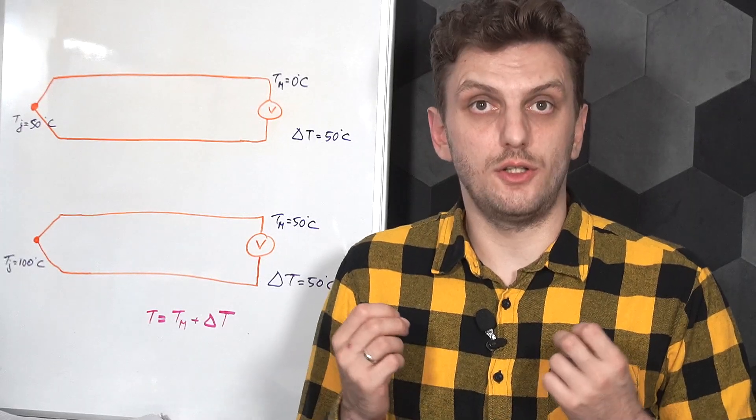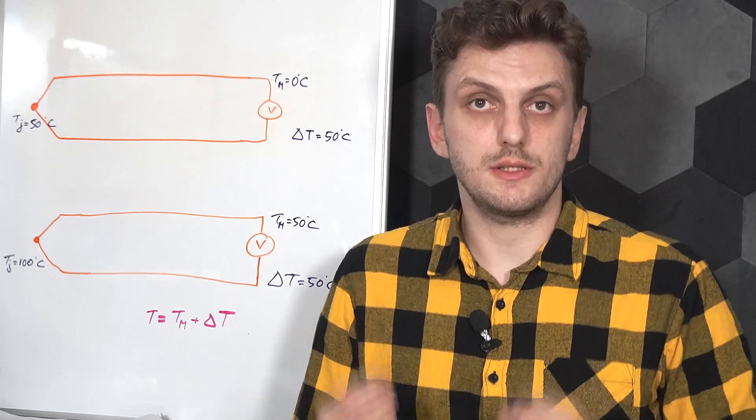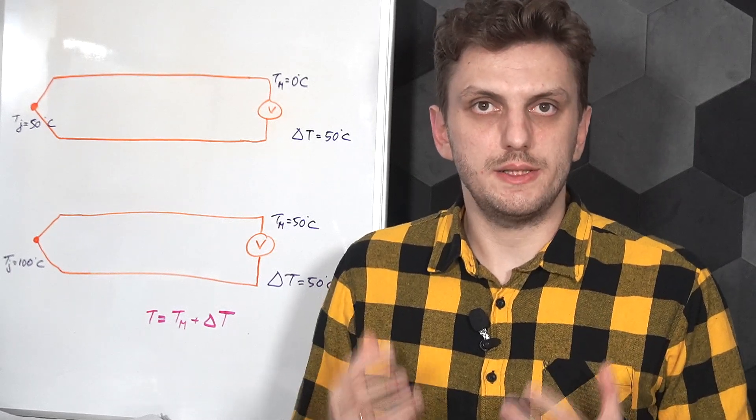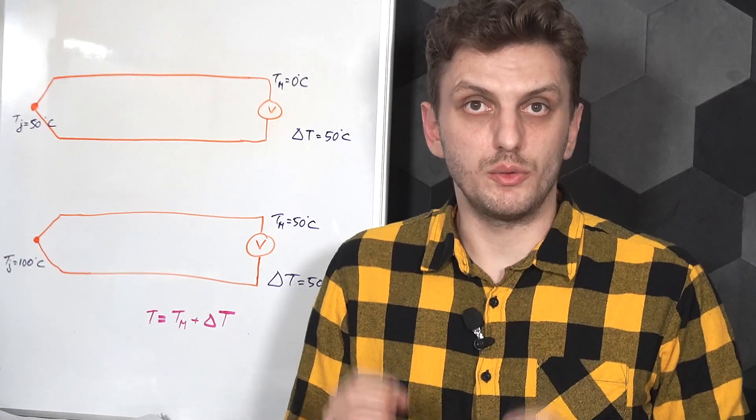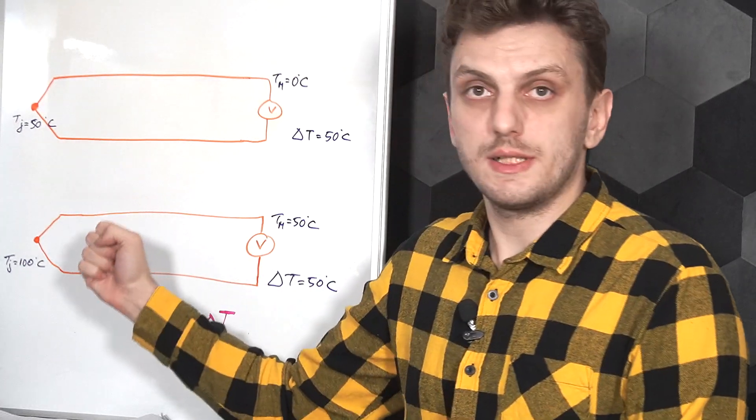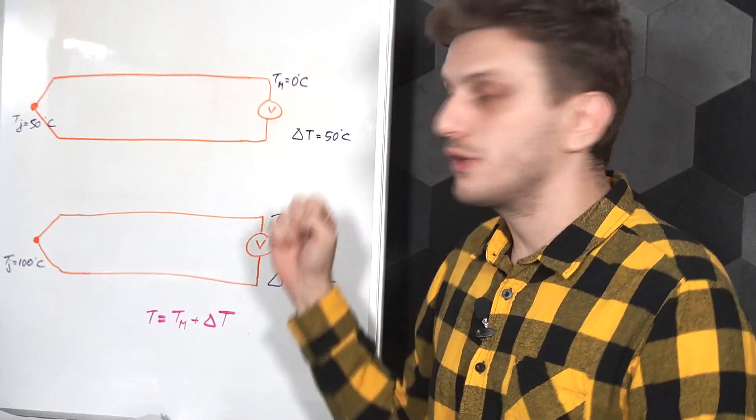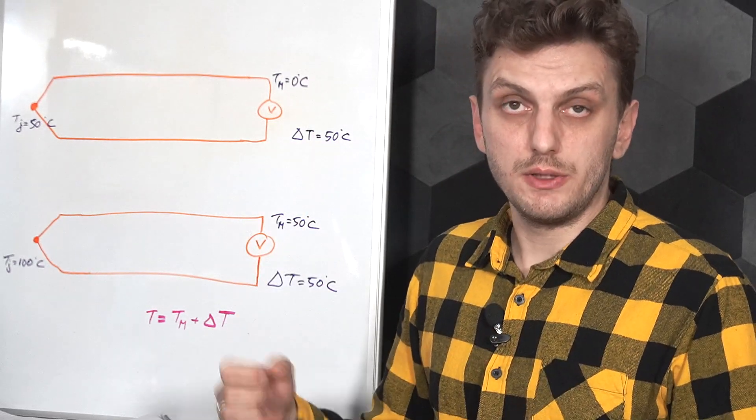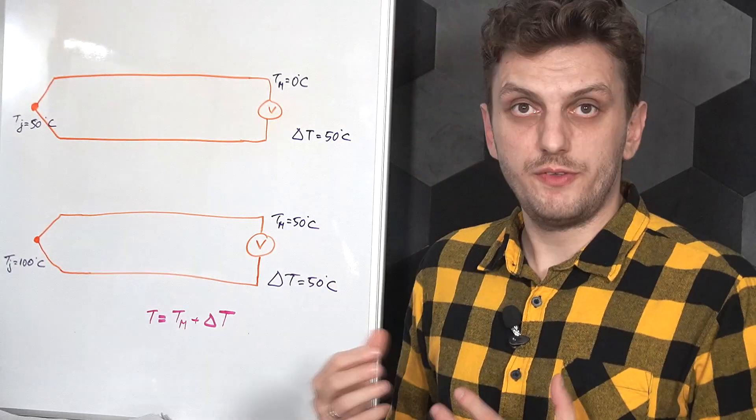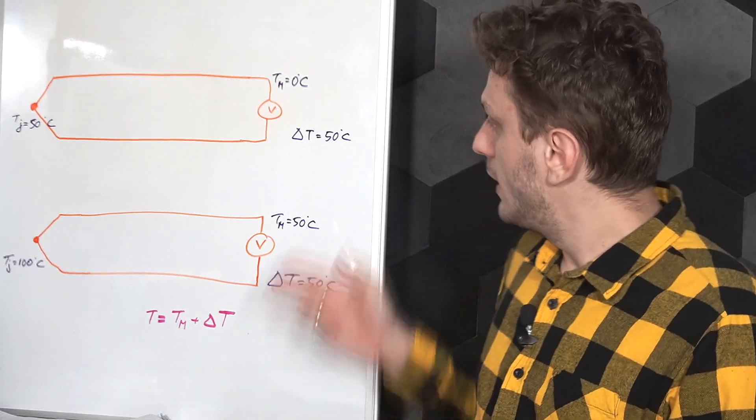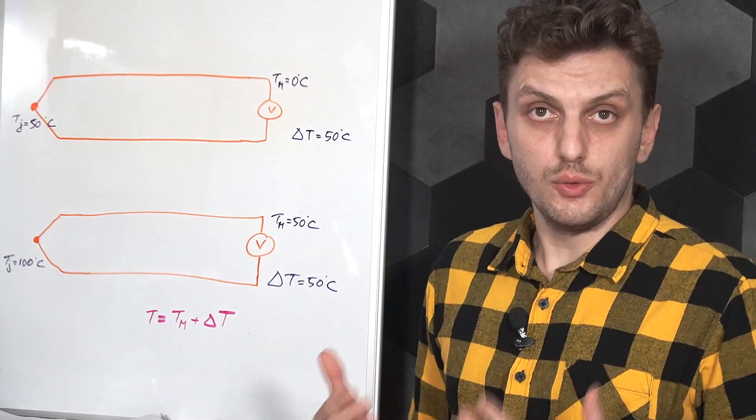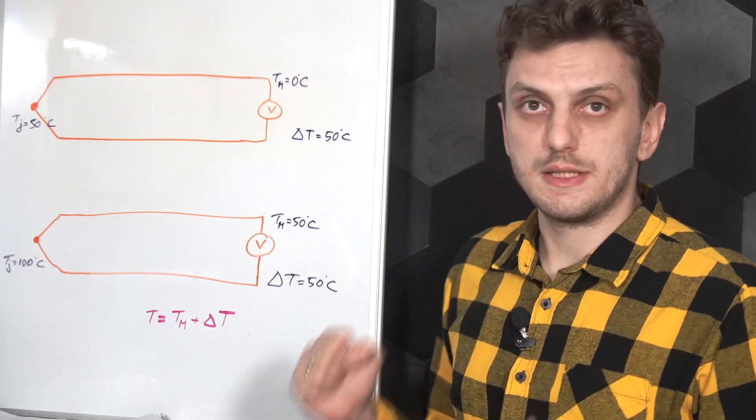First of all is the operating principle. A thermocouple is a relative temperature measurement method, not an absolute one like the ones we looked at previously. This means that a thermocouple will give you a voltage proportional to the temperature difference between its hot and cold ends. If we have a thermocouple whose junction is at 50 degrees Celsius, and the measurement equipment is at 0 degrees Celsius, and we have another thermocouple made from the same materials, where the junction is at 100 degrees Celsius and the meter at 50 degrees Celsius, in both cases the temperature difference between hot and cold ends is the same, 50 degrees. So both of these setups will give us the same voltage value.